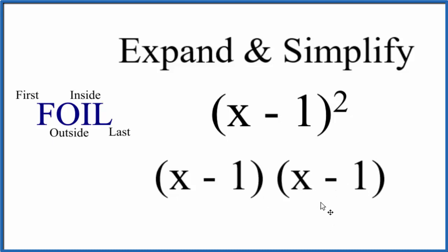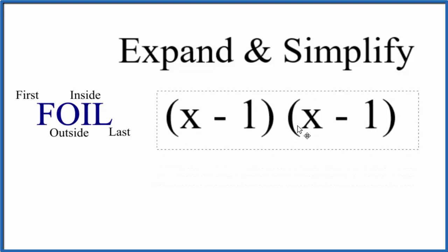So this is a little bit easier to work with. We can use the distributive property where we multiply the first x by all of this, then we multiply negative 1 by all of that. And when we do that, we'll have expanded and simplified x minus 1 to the second power, or x minus 1 squared. So let's work with this.